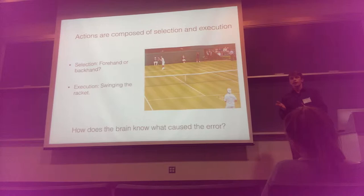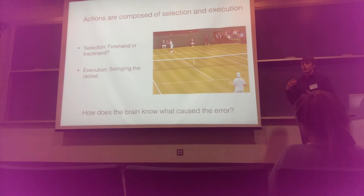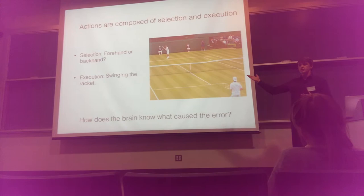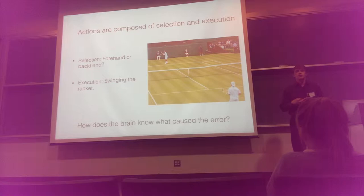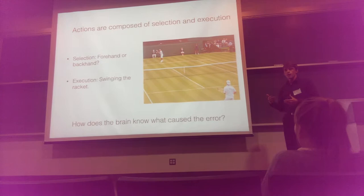An important thing to consider is that when you have an error in your action — say you hit the ball into the net — this error can be a source of either an error in your selection system, maybe you forced a backhand when you should have hit a forehand, or an error in your execution system, maybe you mis-hit the ball. Our question is: how does the brain know which of these two systems caused the error, and how does it know which system needs to improve in the future?